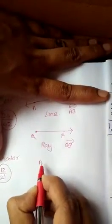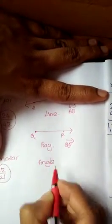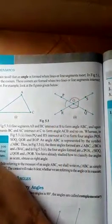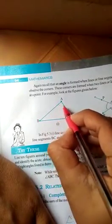What is an angle? An angle is formed when lines or line segments meet. For example, on page number 94, consider these two lines PQ and RS. They meet at point A, and these lines form four angles: 1, 2, 3, and 4. Similarly, if two line segments meet, it again forms an angle.